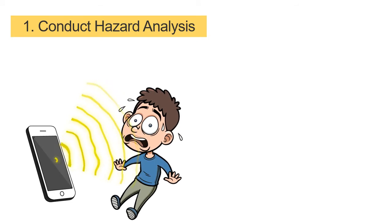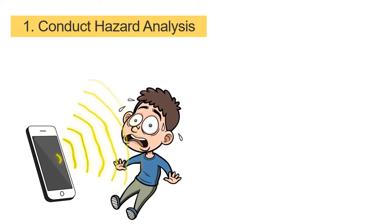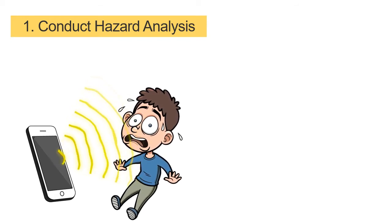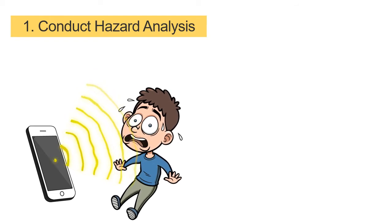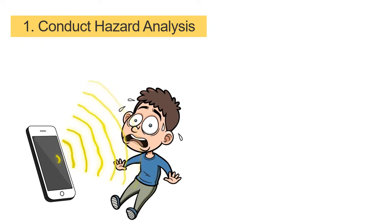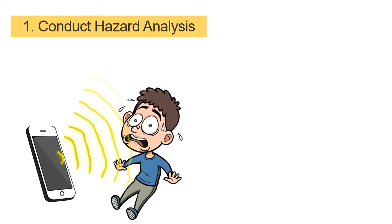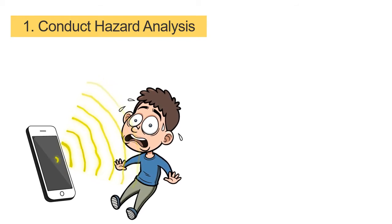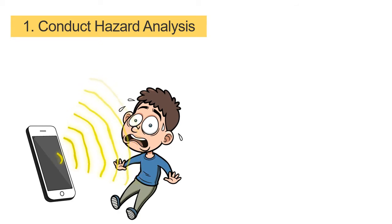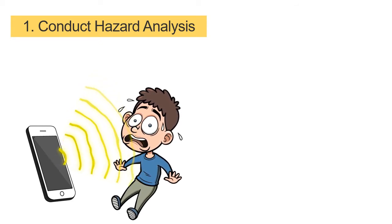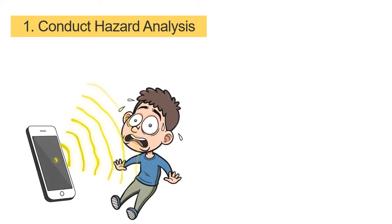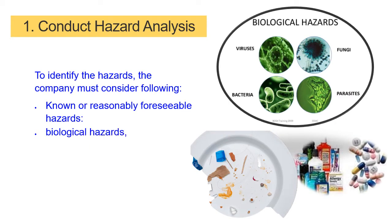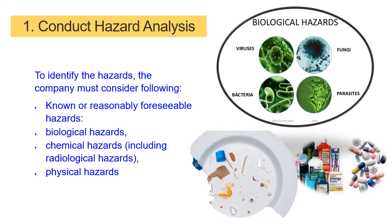Step 1: Conduct Hazard Analysis. The HA in HARPC stands for Hazard Analysis and addresses the core intent of the law — to identify hazards due to the specific foods or food ingredients, or due to the various processing, manufacturing, packing, and holding steps applied to the foods. Once identified, the company must evaluate each hazard to assess its probability of occurring and the severity of injury it would bring. To identify hazards, the company must consider known or reasonably foreseeable hazards, biological hazards, chemical hazards including radiological hazards, and physical hazards.